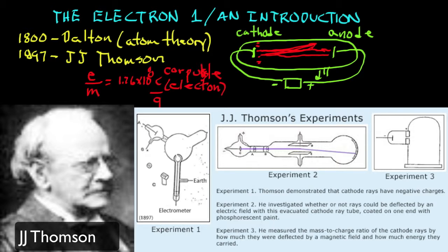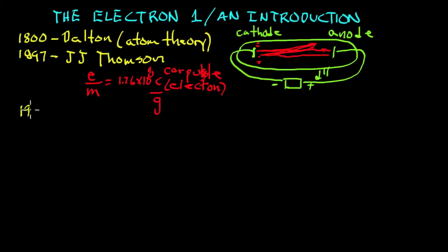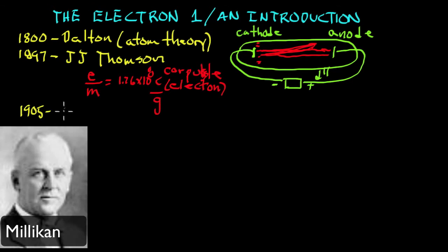Well, this value was known by an American scientist by the name of Millikan. Millikan had the charge to mass ratio, but he didn't know the mass. He didn't know the charge. He knew the ratio. So Millikan solved the problem. He was from the University of Chicago, an American, one of the few Americans you'll see in this era.